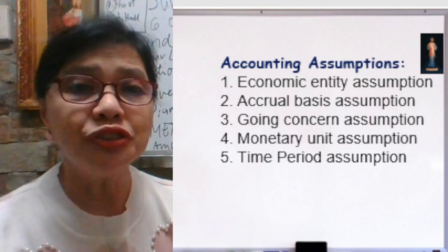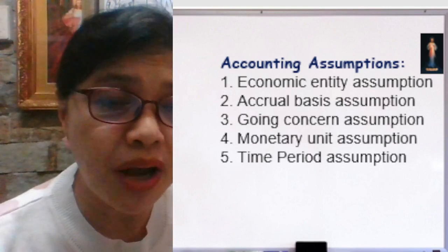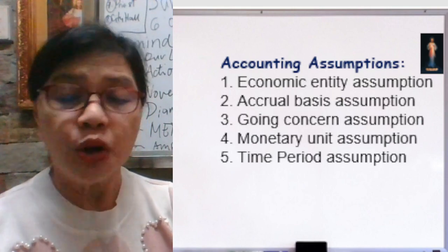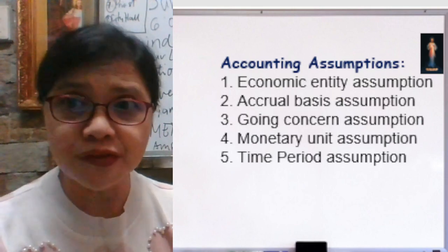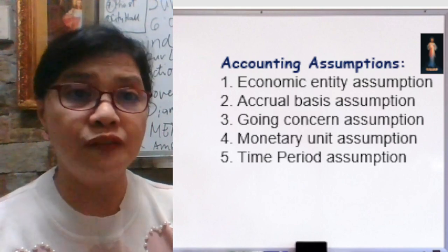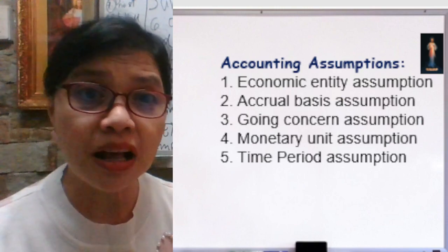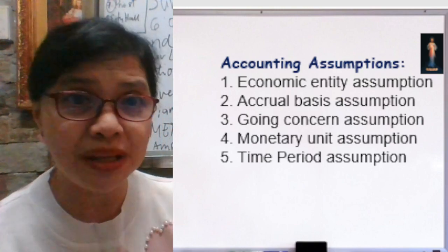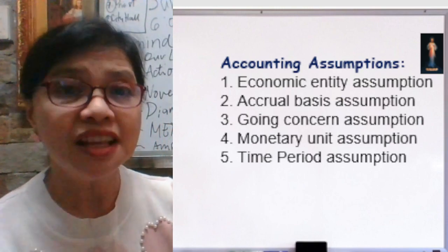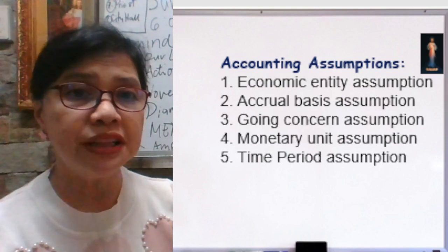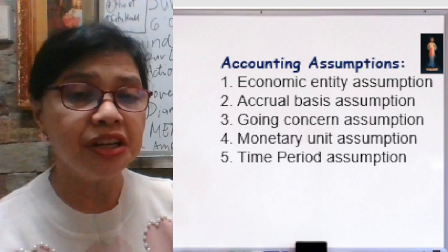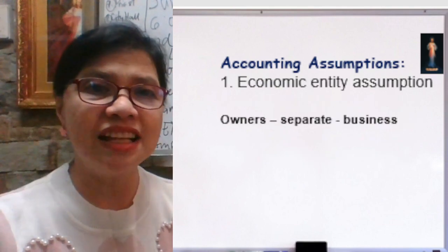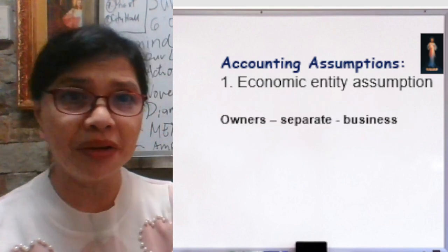For today, I will be showing you the Accounting Assumptions. We have five and I will discuss them individually. Number one: the Economic Entity Assumption. Number two: Accrual Basis Assumption. Number three: Going Concern Assumption. Number four: Monetary Unit Assumption. And number five: the Time Period Assumption. Let's discuss them one by one.